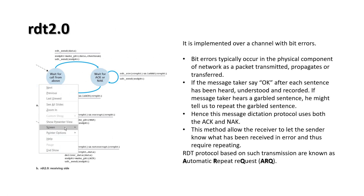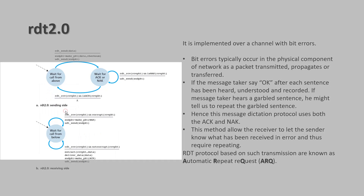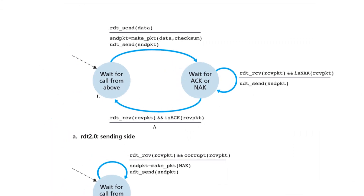On the sending side of RDT 2.0, the sender waits for data from the above layer. When it gets the data, it directly sends the packet to the receiver. After sending, it waits for feedback from the receiver — whether the data was received in the right order or not. If the receiver gives a negative acknowledgement (NAK), retransmission has to be done. If the receiver gives a positive acknowledgement (ACK), it means transmission was done correctly and the sender will wait for further data to send.